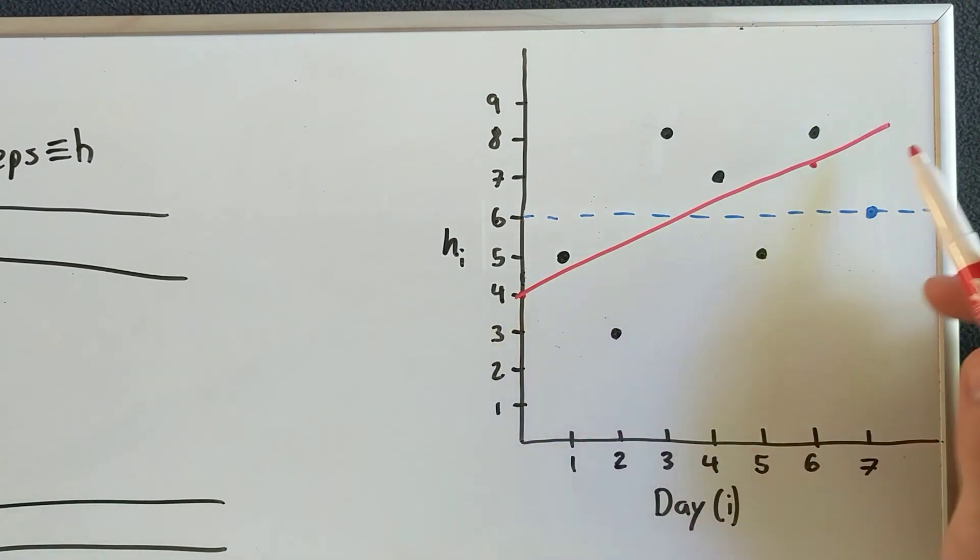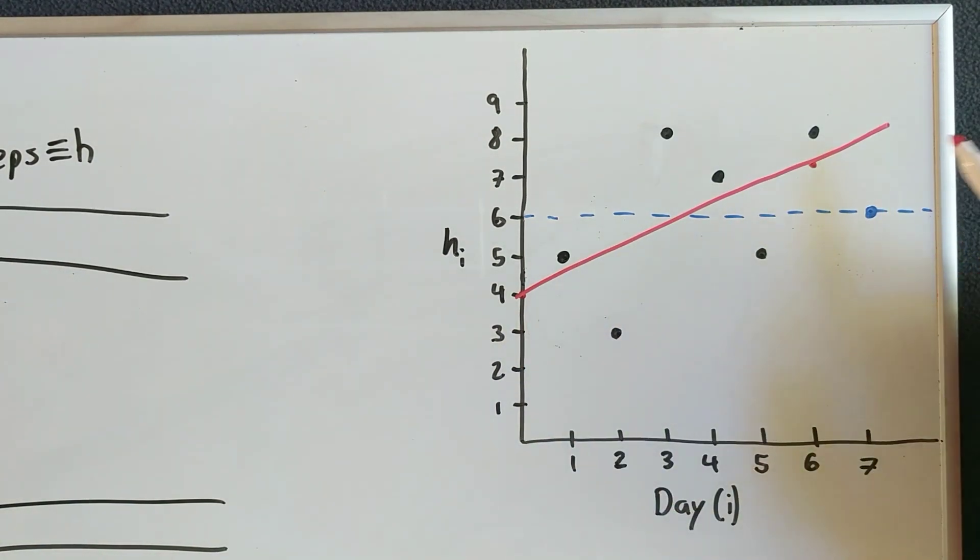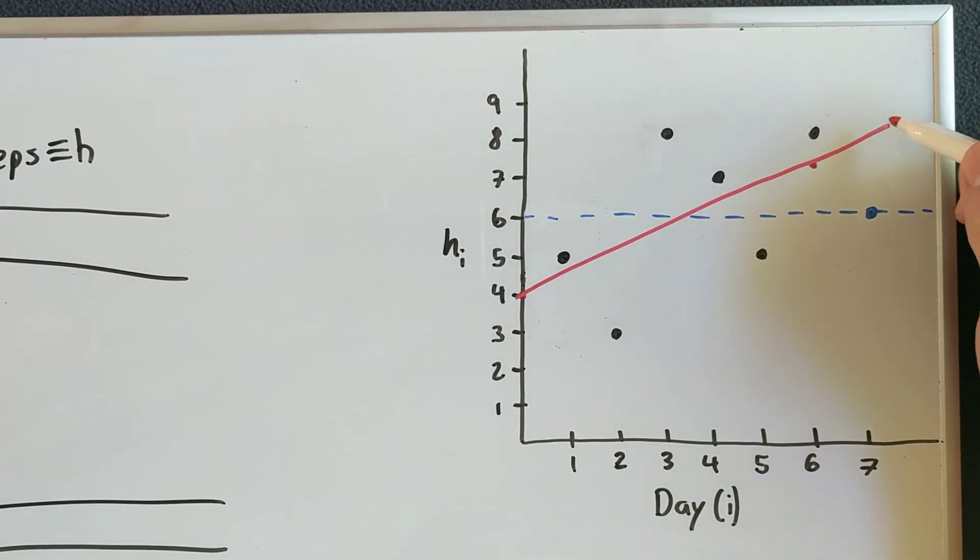And the next step to evaluate our trend line is to, well, we got to find an equation. I don't really know exactly what this value is going to be for our seventh day.